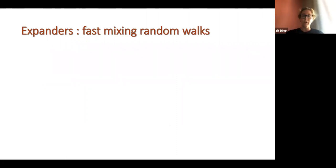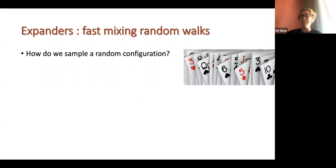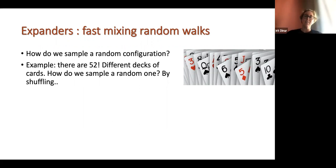Another application of expander graphs is the fast mixing of random walks. Suppose we have a complicated system and we want to sample a random configuration. For example, you have a deck of 52 cards and you want to shuffle them to get a random permutation — completely fair for the game. There are 52 factorial different permutations and you want a random one.